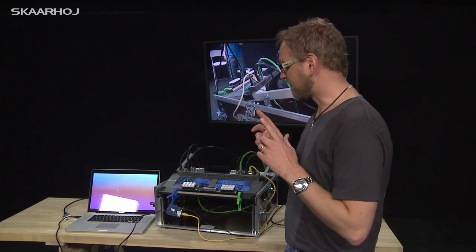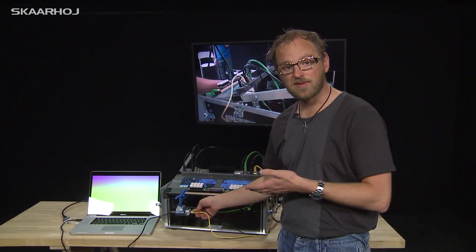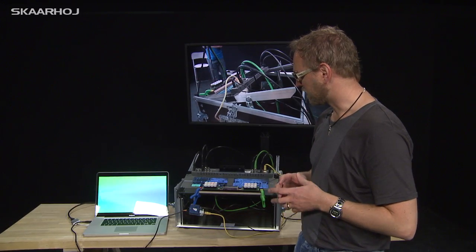This is an example of how you can use the Blackmagic ATEM television studio switcher for VJing purposes. The cool thing is that it's controlled by an Arduino Ethernet module with the ATEM library that I developed for this module.